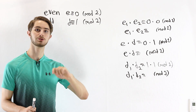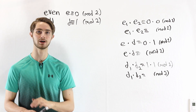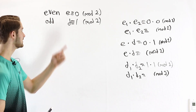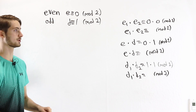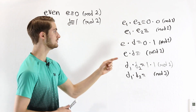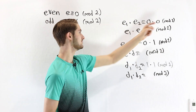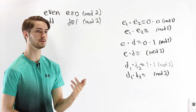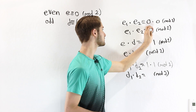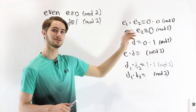Now we're going to take a look at the rules for multiplying. What happens when we multiply two numbers that are either even or odd? We'll go through all the cases. An even number is congruent to 0 and an odd number is congruent to 1. So if we have two even numbers E1 and E2 and we multiply them, the result is congruent to 0 times 0 mod 2, which is 0. This means that when we multiply two even numbers, the result is always even.